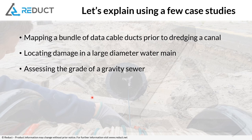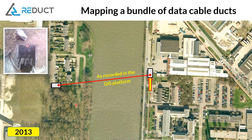We have three case studies: mapping a bundle of cable ducts prior to dredging a canal; locating damage in a larger diameter water main; and assessing the grade of a gravity sewer. Let's jump into the first one. Back in 2013, there was a line in the GIS platform of the network owner. There were two manholes — this is a data duct, a 40 millimeter ID duct, standard DN50 size pipe. The owners already knew the line in the GIS was incorrect, because when they opened the duct, they could see the pipe was coming in from the south, not from the side. So they knew this line was just a placeholder, but they had no idea how it went from A to B.